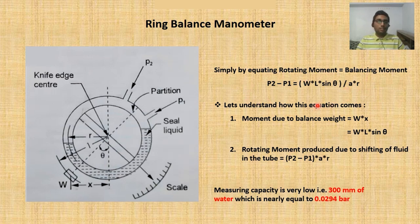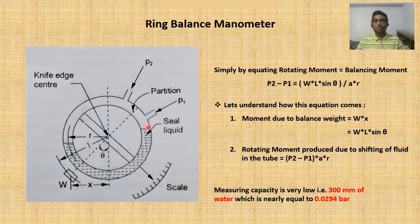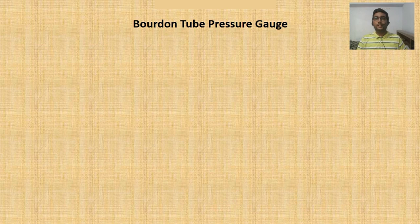The measuring capacity of the ring balance manometer is not suited for very high pressure. Its range is only 300 mm of water, which is approximately equal to 0.029 bar. A pressure difference of 0.029 bar is more than enough for this instrument.